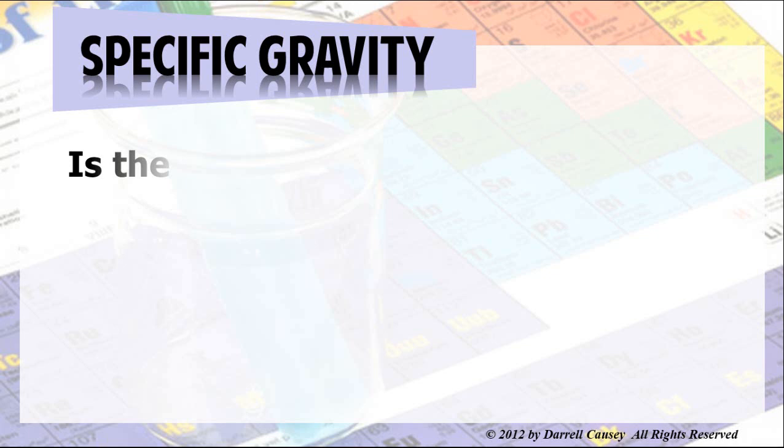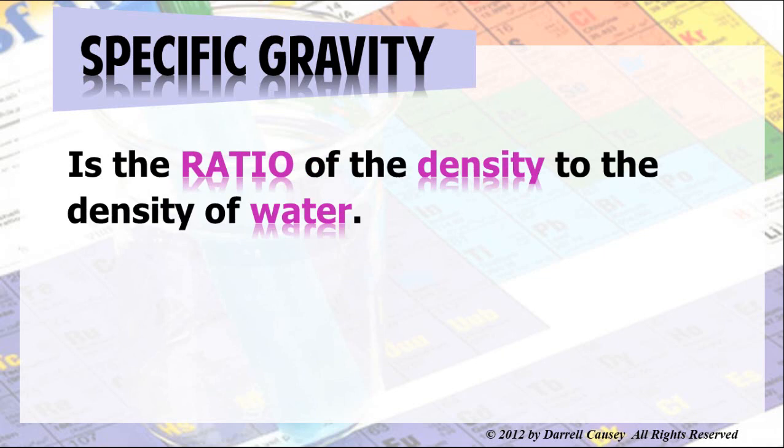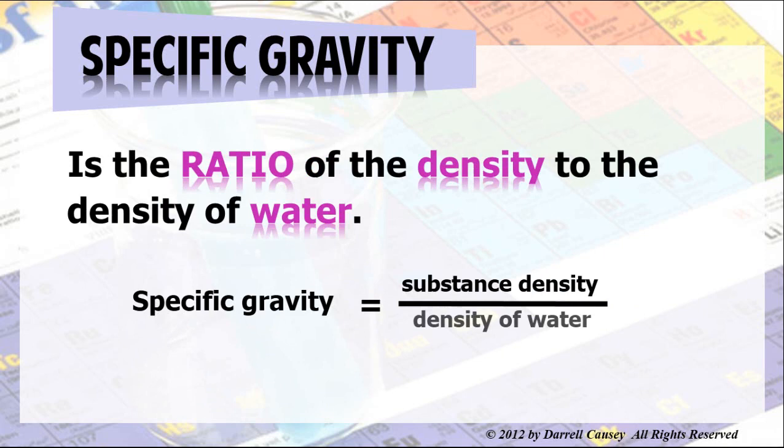Well, what's specific gravity? Well, specific gravity is the ratio of the substance density to the density of water. Now, it's another ratio. Therefore, that means we're looking at another division problem. And specific gravity is just the substance density divided by the density of water. And, of course, remember that density of water is 1.0 grams per milliliter.